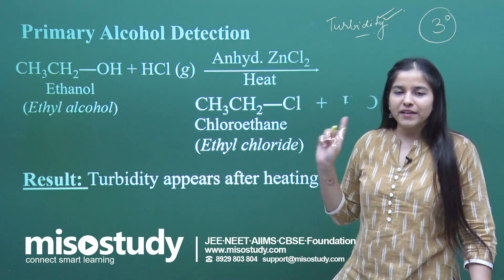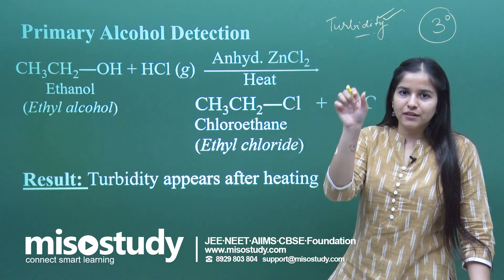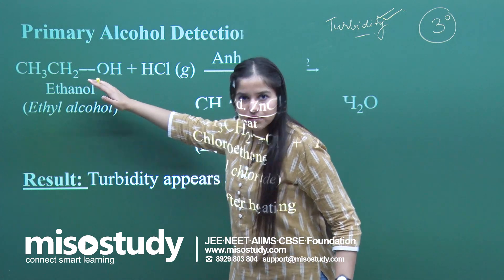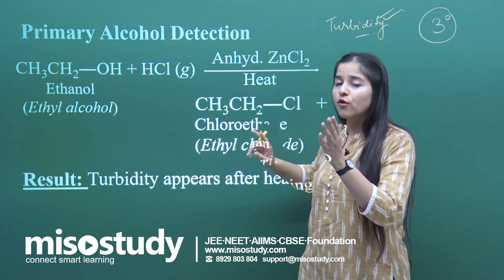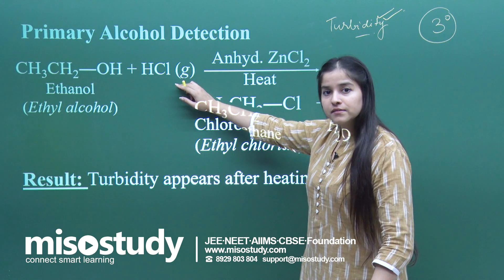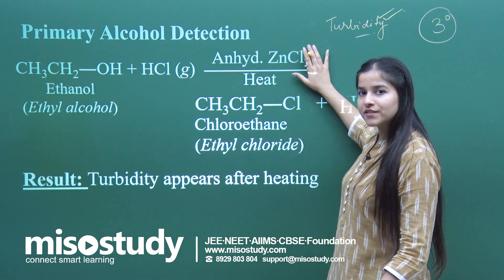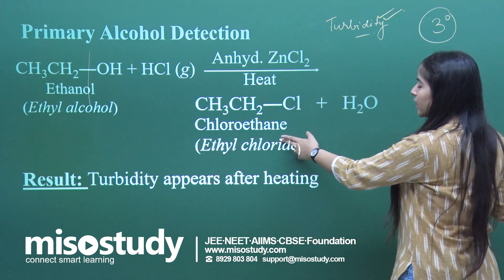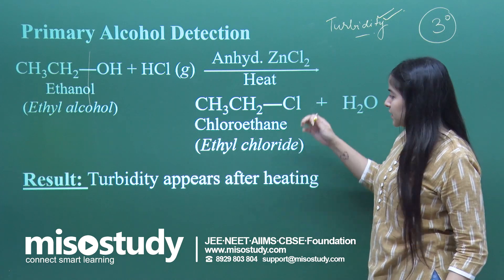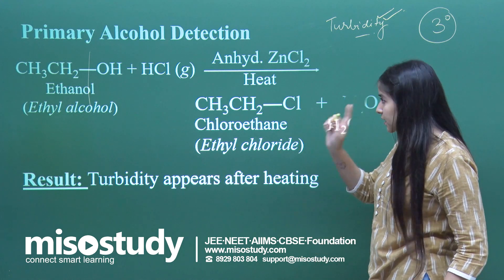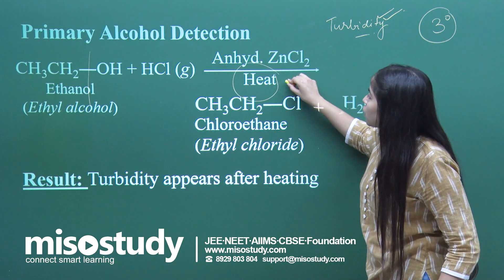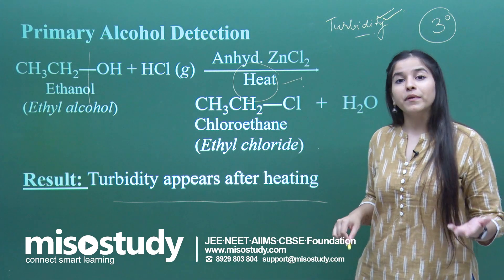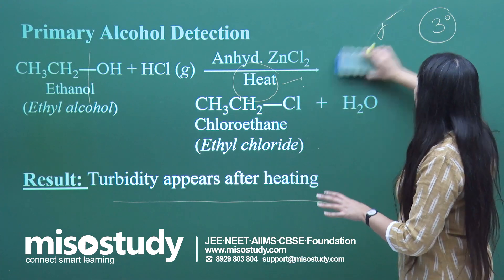Clear and quick turbidity is seen for tertiary alcohols. Now, for primary alcohol — here ethyl alcohol (a primary alcohol) is the example. Primary being the least stable, the carbocation will form very slowly in the presence of HCl. Our main reagent, the Lewis acid, cleaves the C-O bond, and we get ethyl chloride as the product. Once this forms, turbidity appears, but in this case I needed a lot of heat to observe the turbidity. So the result for primary alcohol is: turbidity appears only after heating, not quickly on its own.